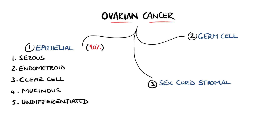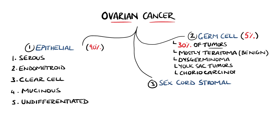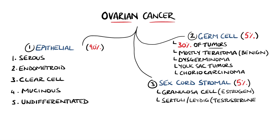Germ cell tumors make up 5% of ovarian cancers but 30% of ovarian tumors. This is explained because most germ cell tumors are teratomas, and most of these are benign. Other types include dysgerminomas, yolk sac tumors, and choriocarcinoma. Sex cord stromal tumors make up 5% of ovarian cancer and include hormone-producing tumors such as estrogen-producing granulosa cell cancers or Sertoli and Leydig cell tumors.